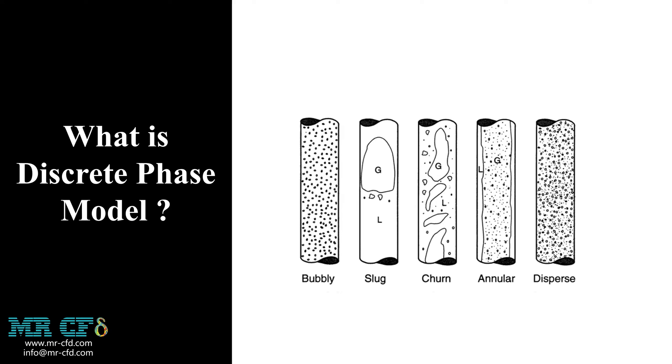We begin the introduction chapter with the general question: what is a discrete phase? In fact, any flow consisting of two or more phases is called multiphase. From the analytical viewpoint, we should deal with each phase based on its specifics and conditions. When there is at least one dispersed phase, we need to use the Lagrangian framework, which is carried out by the DPM module in ANSYS Fluent.